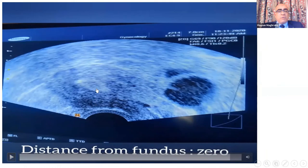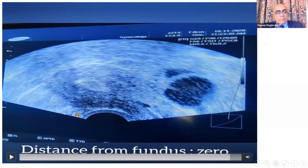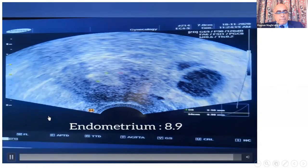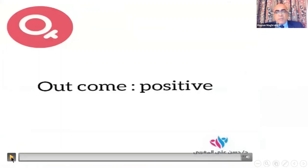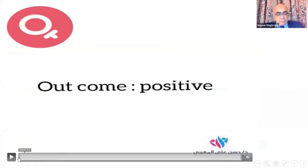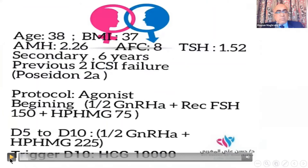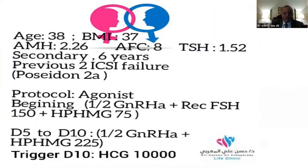Subtracting 1.5 from these measurements and placing the embryos safely. If you notice here, after placing the embryos they moved from this point up to the tip of the endometrium, so the distance became zero. The patient was pregnant.